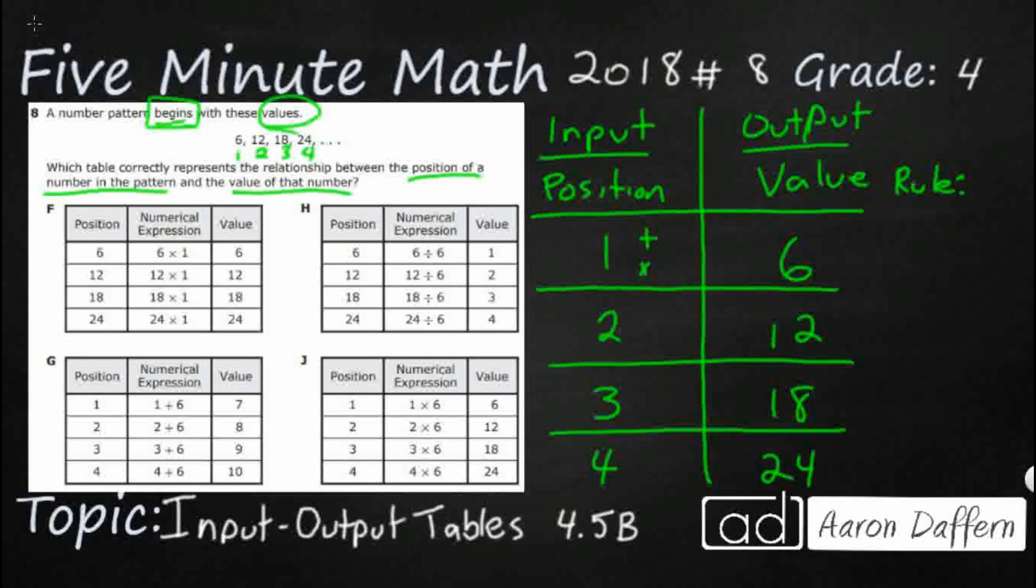So let's try adding: 1 plus 5, that makes 6. But does 2 plus 5 make 12? No, that'd be a 10. Does 3 plus 5 make 18? No. And 4 plus 5 definitely does not make 24. So it's not a plus 5.